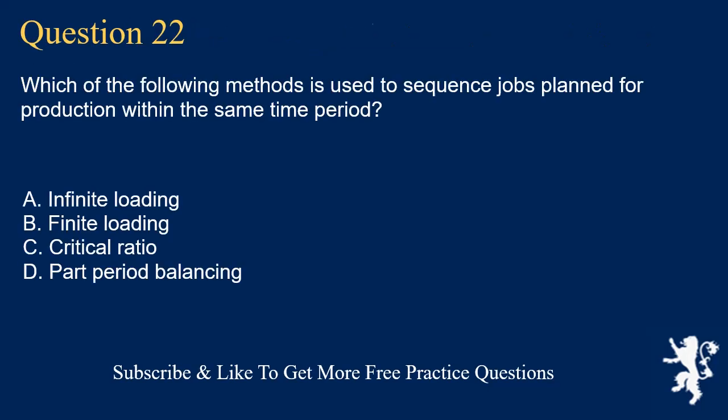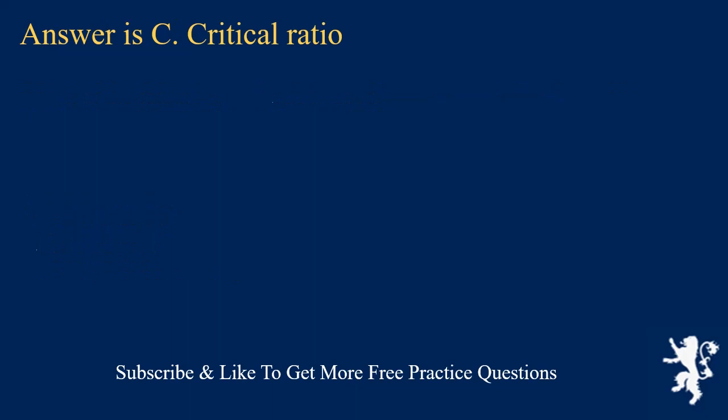Question 22. Which of the following methods is used to sequence jobs planned for production within the same time period? A. Infinite loading. B. Finite loading. C. Critical ratio. D. Part period balancing. Answer is C. Critical ratio.